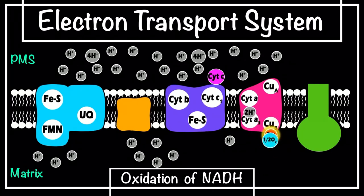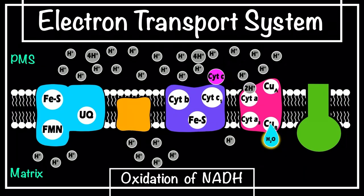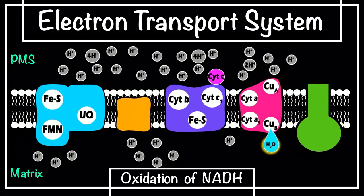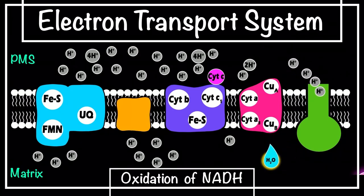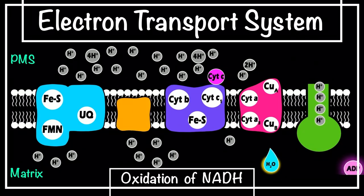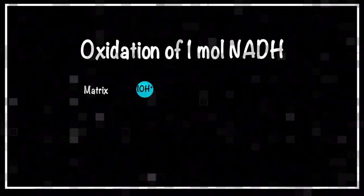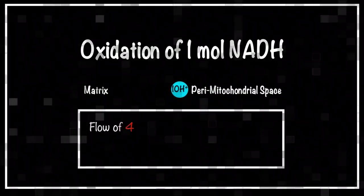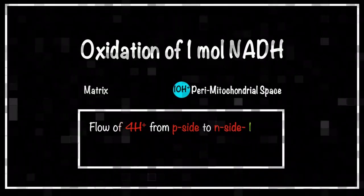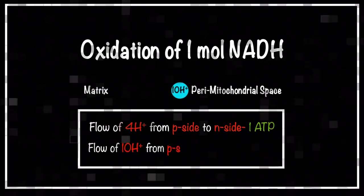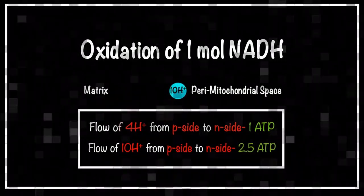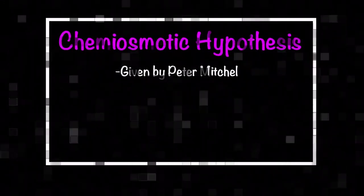Finally, the two electrons are accepted by oxygen, which acts as the terminal acceptor of electrons, and combines with two protons to ultimately form one molecule of water. Complex V or ATP synthase is not directly involved in the electron transport system, but is required for ATP formation. The flow of four protons from the P-side to the N-side through the F0 part of Complex V by facilitated diffusion results in the formation of one molecule of ATP. So, oxidation of one molecule of NADH results in the flow of 10 protons from the matrix to the intermembrane space — four through Complex I, four through Complex III, and two through Complex IV — resulting in the formation of 2.5 molecules of ATP.